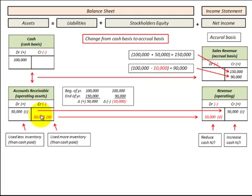Now if our accounts receivable reduced by $10,000 during the year, we'd have a reduction in our revenue of $10,000. So taking our cash basis of $100,000 and subtracting out that reduction of $10,000 in revenue, we'd have $90,000 worth of sales revenue on the accrual basis.